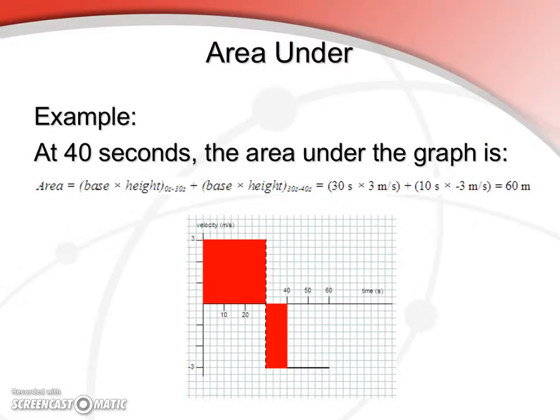Okay, so hopefully you've filled out your graph now, but we'll do one example here. At 40 seconds, we have the area under the graph as the expression given here. The area above is 30 seconds times 3 meters per second equals 90 meters plus 10 seconds times negative 3 meters per second gives us a total of 60 meters.